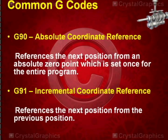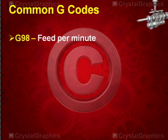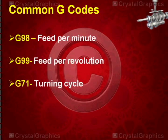Other common G codes are G98 feet per minute, G99 feet per revolution, G71 turning cycle, and G76 is threading cycle.